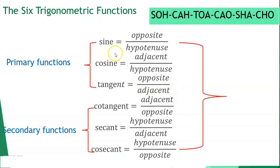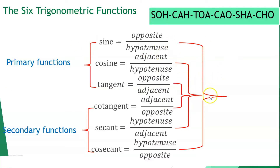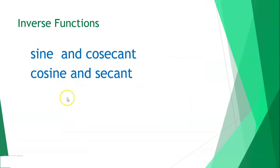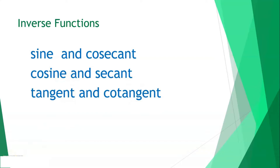Take note: sine and cosecant are inverses — sine is opposite over hypotenuse, cosecant is hypotenuse over opposite. Cosine and secant are also inverses of each other. Tangent and cotangent are also inverses of each other. These pairings are considered inverse functions.